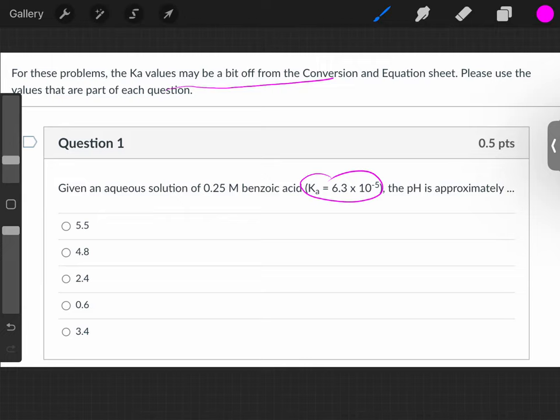The question says the pH is approximately, and what we're going to do is go to the conversion equation sheet and look up benzoic acid. It's 6.5, which is pretty close, but for this problem, I'm going to use the 6.3. The formula is HC7H5O2.